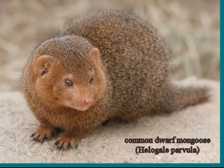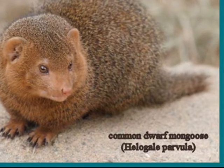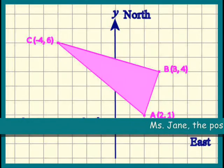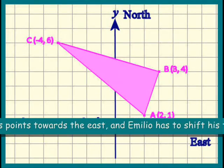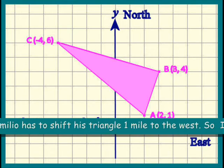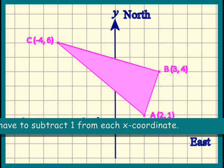Let's ask your new classmate, Mongoose, whether he has any ideas. Miss Jane, the positive x-axis points towards the east, and Emilio has to shift his triangle one mile to the west. So I think we have to subtract one from each x-coordinate.